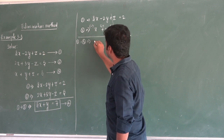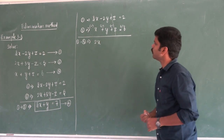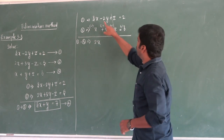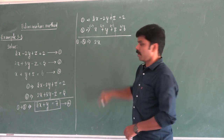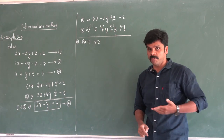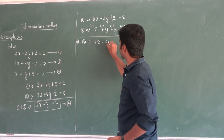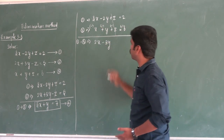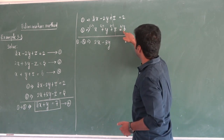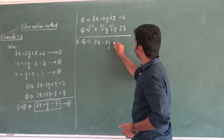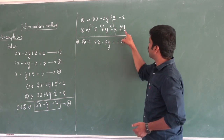So 3x minus x is 2x. Minus 2y minus y is minus 3y. And minus 6 plus 2 is equal to minus 4. This gives us equation 5: 2x minus 3y equal to minus 4.